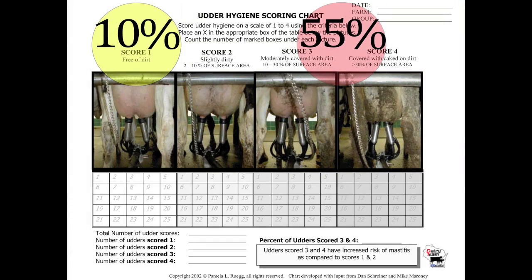Work done in New York had researchers perform udder hygiene scoring on cattle and then take swabs of the udders. What they found was pretty interesting. When udders were clean — meaning they had an udder hygiene score of 1 — only about 10% of those udders yielded Klebsiella from the udder skin swabs. In contrast, when udders were dirty — scored 3s or 4s — 55% of those udders were colonized with Klebsiella. So clearly, looking at hygiene of the dairy cows is an important way to work on controlling this organism.